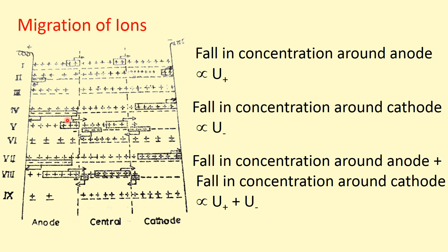Now consider a second situation: six Faradays of electricity are passed. Then six anions are deposited at the anode and six cations are deposited at the cathode. If the velocities of cation and anion are equal, then three cations migrate from anode to cathode and three anions migrate from cathode to anode — meaning three Faradays are carried by the cation and three Faradays by the anion.